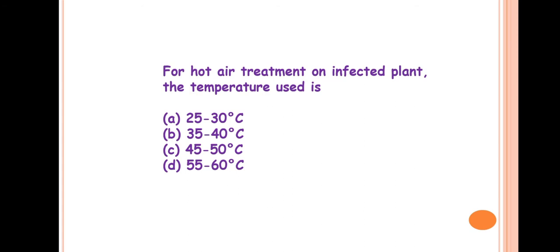Next question is: for hot air treatment on infected plant, the temperature used is? So the answer is 35 to 40 degrees Celsius. This is a physical method to manage the crop infection or the pathogen. Hot air, hot water can be used. For hot air, the air must be between 35 to 40 degrees Celsius. Hot air treatment is generally given inside an incubator for 2 to 4 weeks. So the time interval is 2 to 4 weeks and temperature is 35 to 40 degrees Celsius.